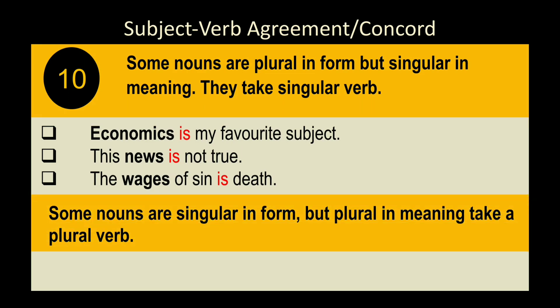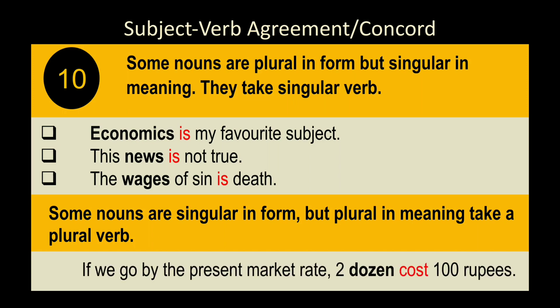Rule 12: Some nouns are singular in form but plural in meaning — they take a plural verb. Example: 'Two dozen cost 100 rupees.' 'Dozen' looks singular (no 's' or 'es'), but one dozen contains 12 entities, so it is treated as plural. We use 'cost' (plural form) instead of 'costs.'